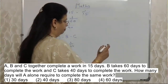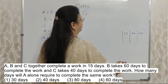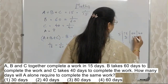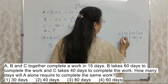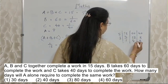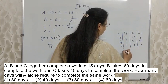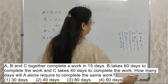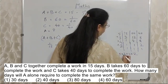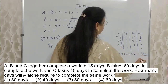Everybody knows how to find the LCM, but I will show you the shortest possible way. We factor out: 5, then 3, then 4, then 2. Multiplying all these: 5 into 3 is 15, 15 into 4 is 60, 60 into 2 is 120. So 120 is the LCM.